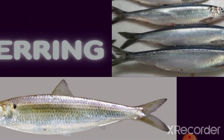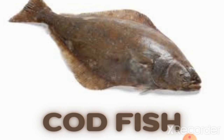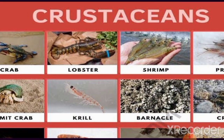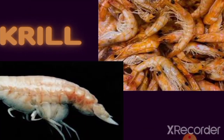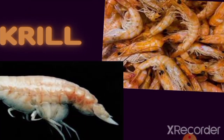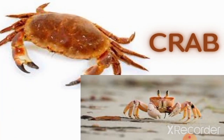Seals are web-footed animals that can swim, and they are also carnivorous animals that feed on fishes in the sea, such as the herring and the cod fish. These fishes in turn feed on crustaceans.